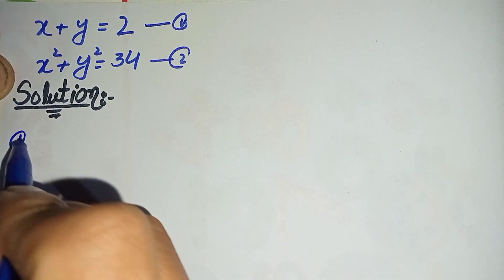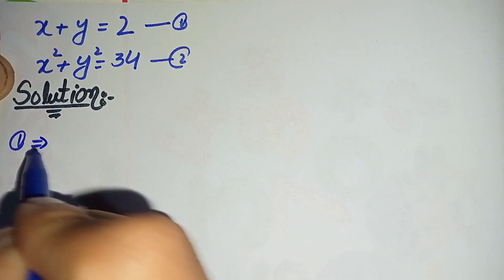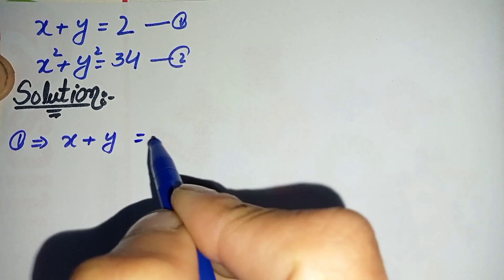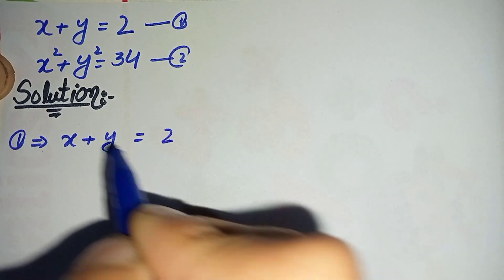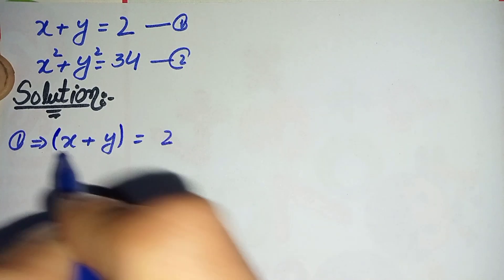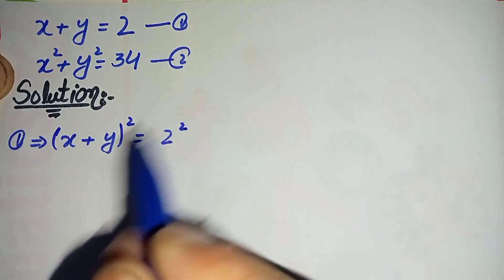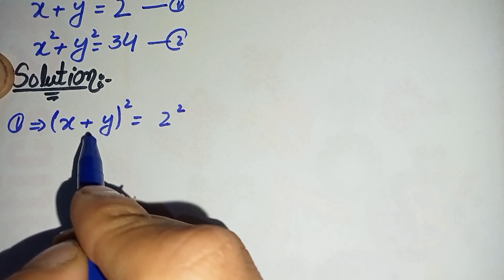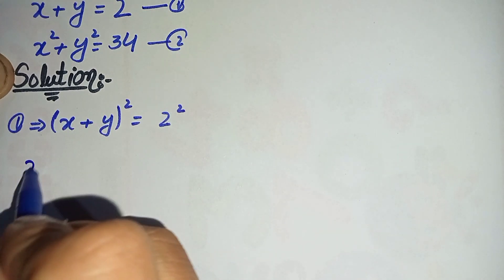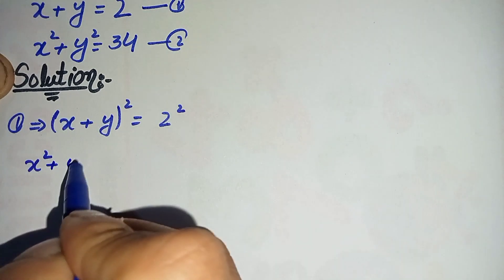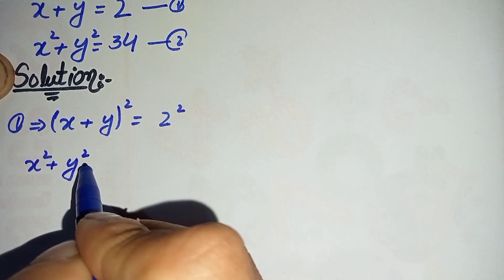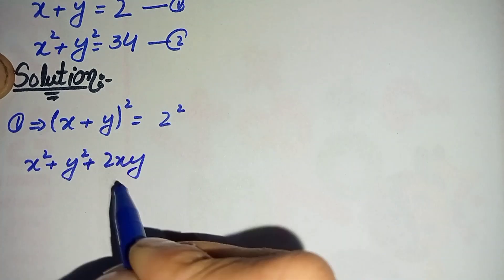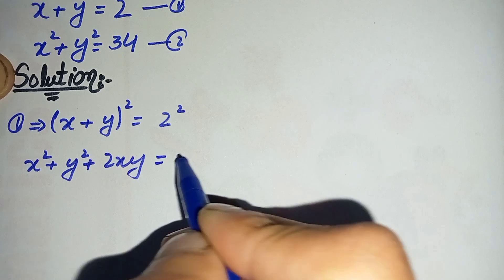From equation number one, x plus y is equal to 2. Here we will take the square on both sides of this equation. This will become — using the algebraic identity (a + b)² = a² + b² + 2ab — where a is x and b is y.